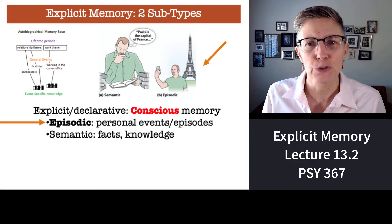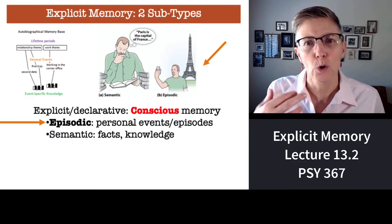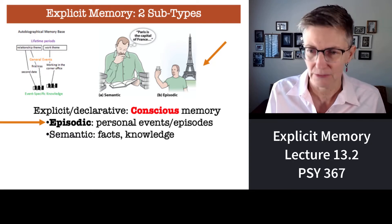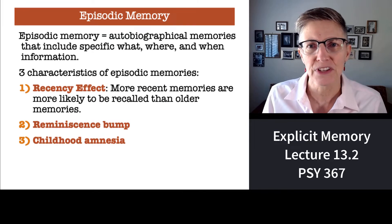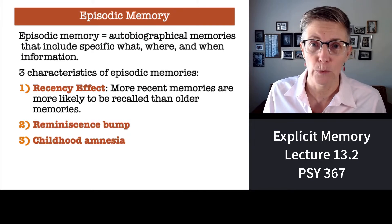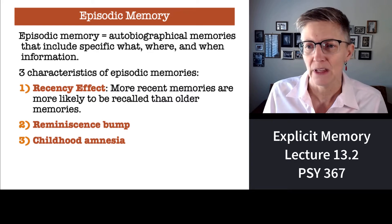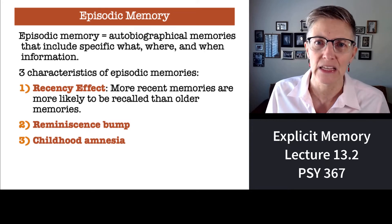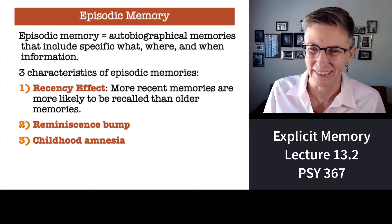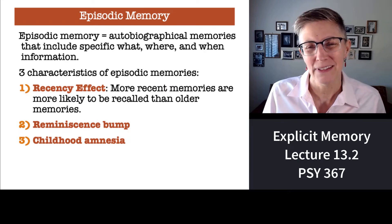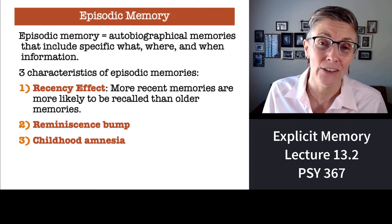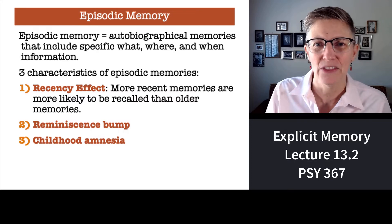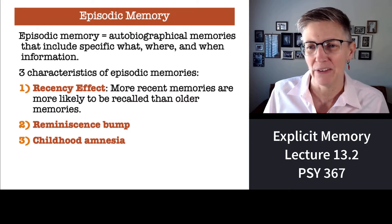Let's start first with episodic memory — periods of your life, your memories of graduating from high school, maybe getting married or having a child. There are three characteristics of episodic memories we will talk about in unit 12: the recency effect — and this is a different recency effect from the serial position effect — the reminiscence bump, and childhood amnesia. I'm going to wait on childhood amnesia and address it in the last mini-lecture from unit 12, which is about amnesia.